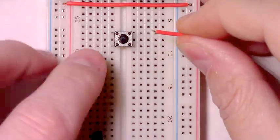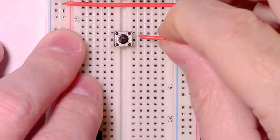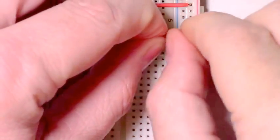Use a piece of wire, connect the top right-hand corner of our momentary button to the VCC for the power rail.